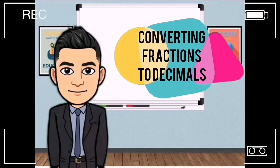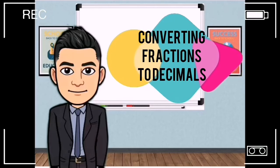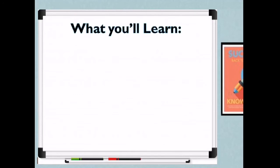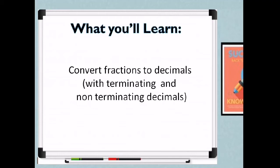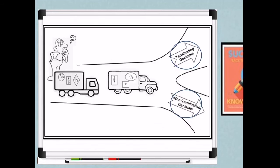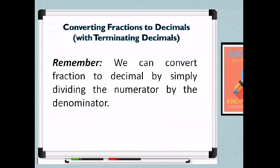Our topic is about converting fractions to decimals — terminating and non-terminating decimals. We will study how to convert fractions into decimals, as you have seen on the figure. There are two tracks with fractions inside. When we convert those given fractions, the answers could be terminating or non-terminating decimals. We can convert fractions to decimals by simply dividing the numerator by the denominator.